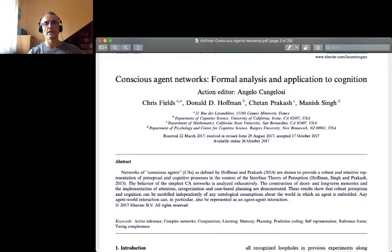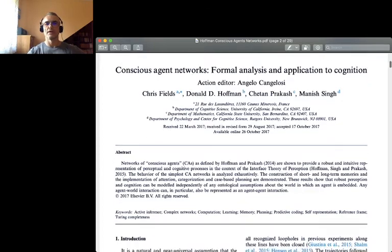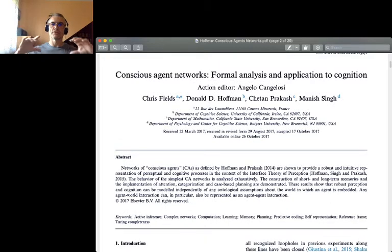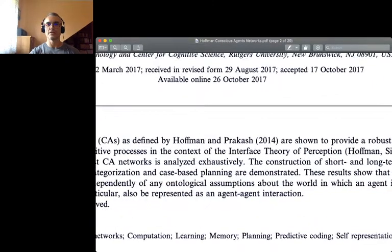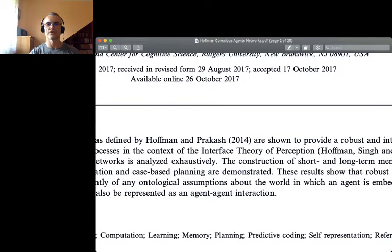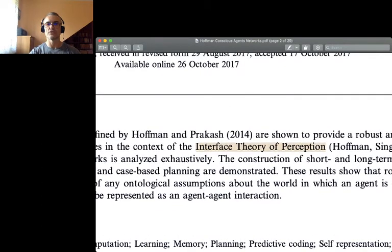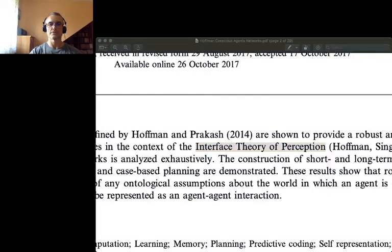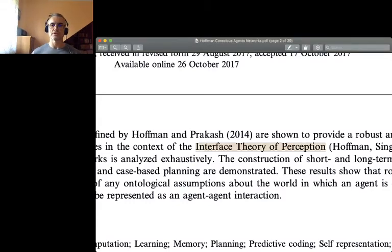Here you have four authors: Chris Fields, Donald Hoffman, Chetan Prakash, and Manish Singh. They essentially make a mathematical theory of conscious existence, and their main claim is the Interface Theory of Perception.